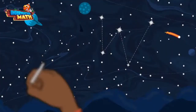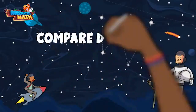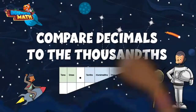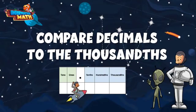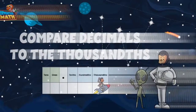Welcome back to underwater math. I'm astronaut Steve and I'm sure you remember my alien friend Lenny. Today, we are going to learn how to compare decimals to the thousandth place. The thousandth place is the third place value after the decimal point. See where our friend Sam landed on his rocket? That is the thousandth place.